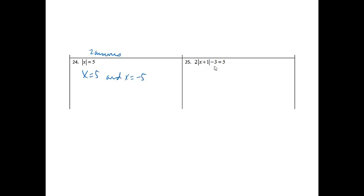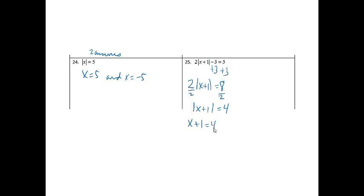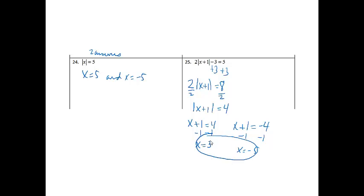This next one, we are going to go ahead and solve. The first thing I want to do is to get rid of the minus 3, so I'm going to add 3 to both sides. So now I'll have 2 times absolute value of x plus 1 equals 8. The next thing is to get rid of the 2, so I'll divide both sides by 2, giving me absolute value of x plus 1 equals 4. Since I have the absolute value isolated, I can set up two equations: x plus 1 equals 4, or x plus 1 equals negative 4. Subtracting 1 from each, I get x equals 3 and x equals negative 5. So once again, I have two answers.